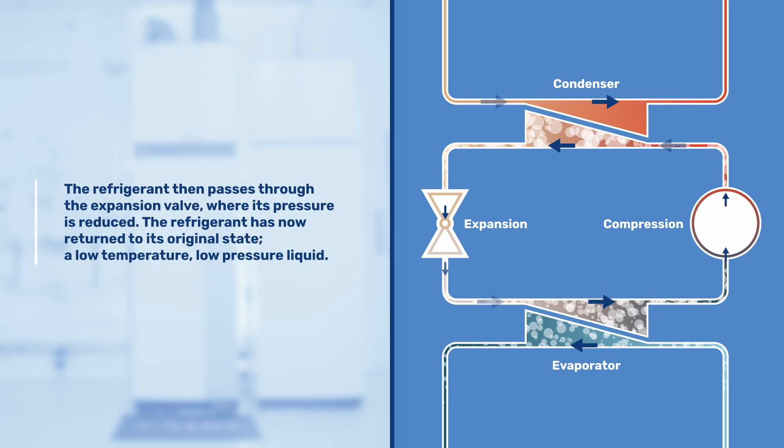The refrigerant then passes through the expansion valve where its pressure is reduced. The refrigerant has now returned to its original state, a low temperature, low pressure liquid.